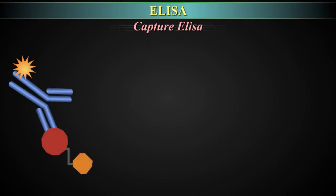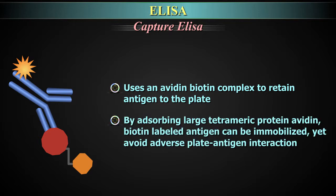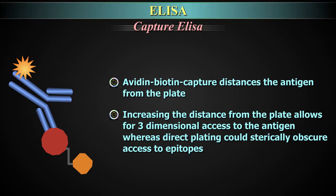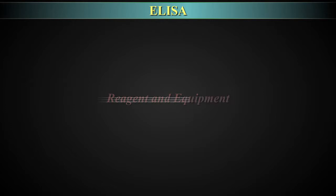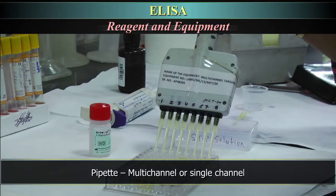Capture ELISA. A similar technique to sandwich ELISA is a capture ELISA, which uses an avidin-biotin complex to retain antigen to the plate. By absorbing the large tetrameric protein avidin, biotin-labeled antigen can be immobilized, yet avoid adverse plate-antigen interaction. Additionally, avidin-biotin capture distances the antigen from the plate, allowing for three-dimensional access to the antigen, whereas direct plating could sterically obscure access to epitopes.